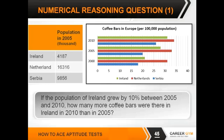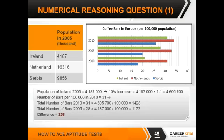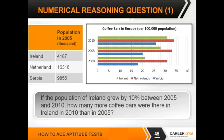Hopefully I'm not breaking your concentration by cutting back in, but I thought it would be a good idea to talk through how the answer was arrived at for this question. So just to remind you of the question: the population of Ireland grew by 10% between 2005 and 2010. How many more coffee bars were there in Ireland in 2010 than in 2005?